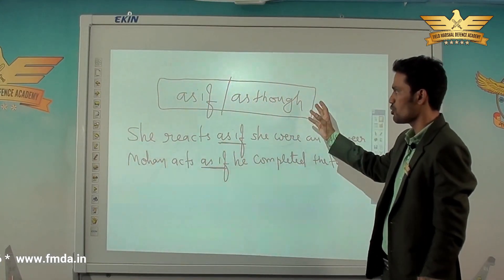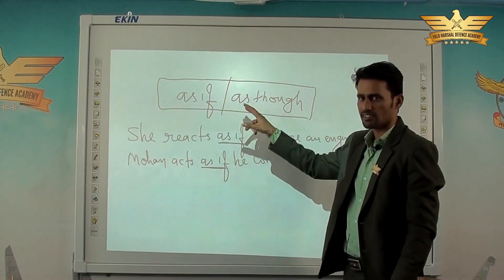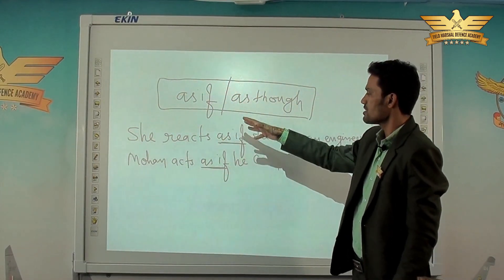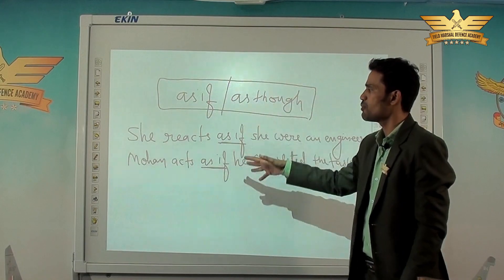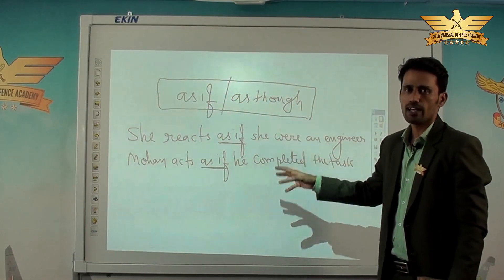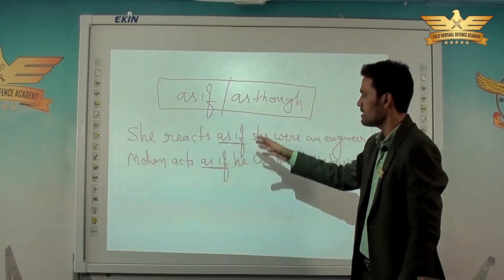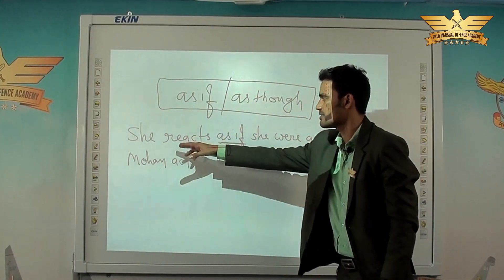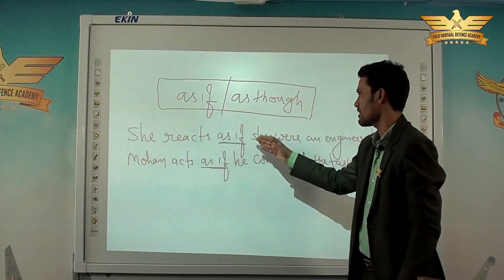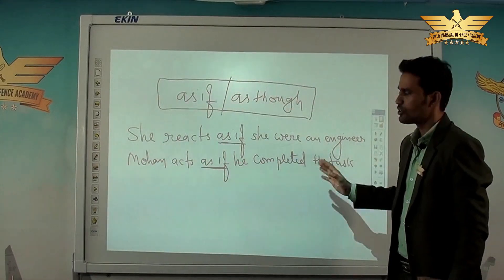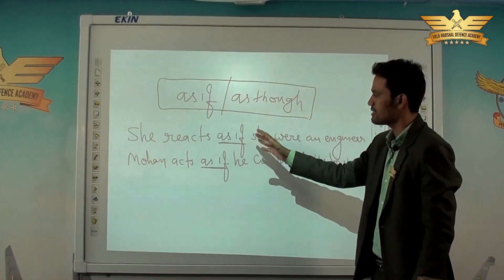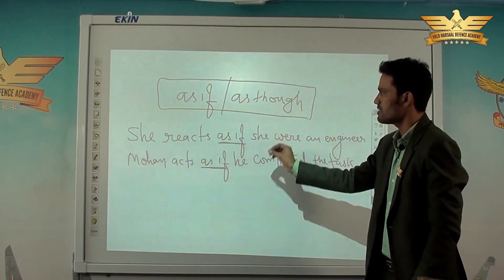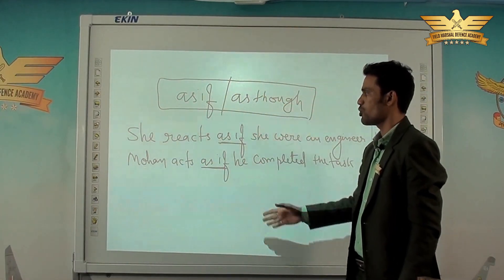'As if' and 'as though' are conjunctions — they are used to connect two sentences. Here, 'as if' connects 'C reacts' and 'C were an engineer.' You can use 'as though' in place of 'as if' — both mean the same thing.